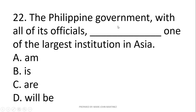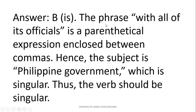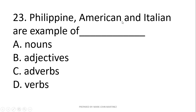Next: The Philippine government with all of its officials blank one of the largest institutions in Asia — am, is, are, or will be? Our subject is 'the Philippine government,' which is singular, so our linking verb should also be singular. The correct answer is letter B: 'is.' The phrase 'with all of its officials' is a parenthetical expression enclosed between commas, so our subject remains singular.